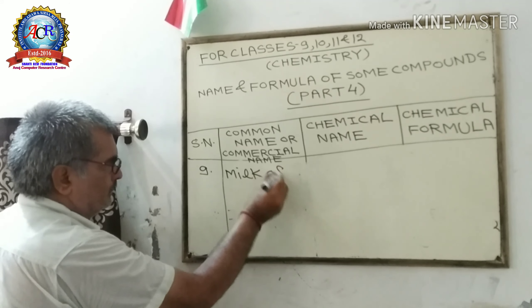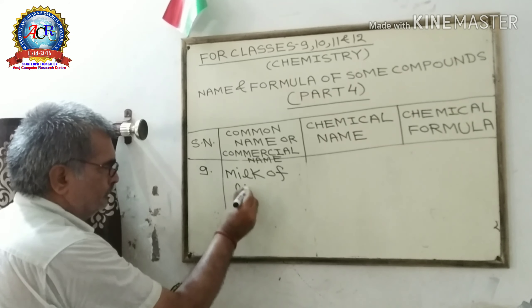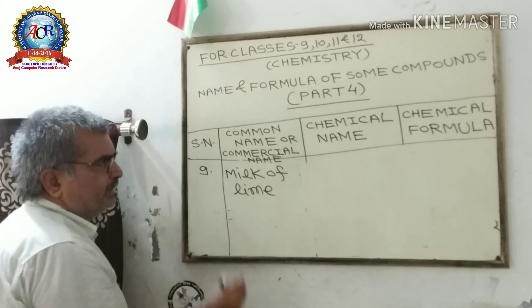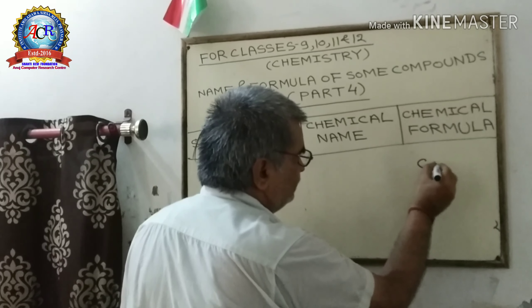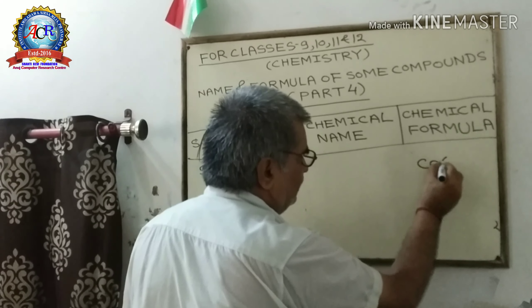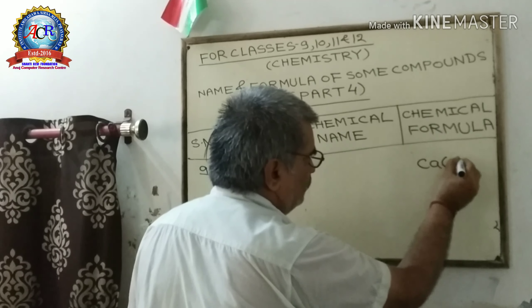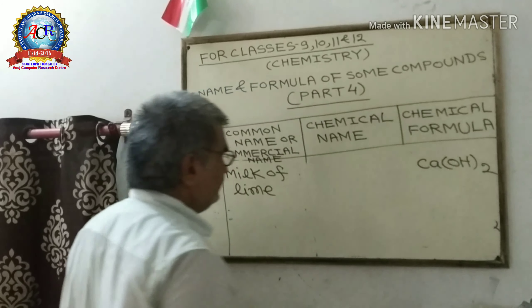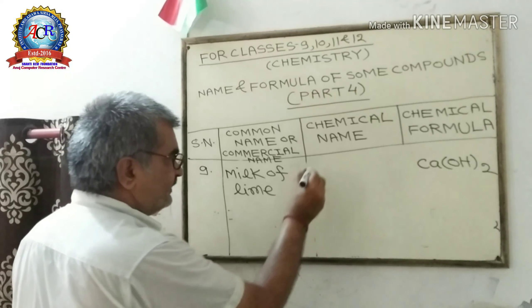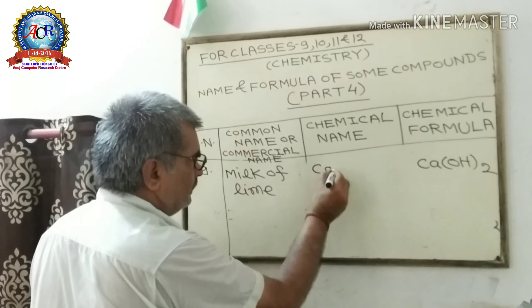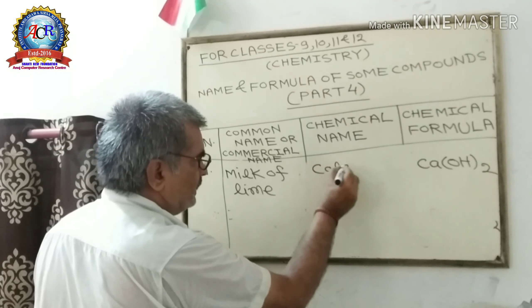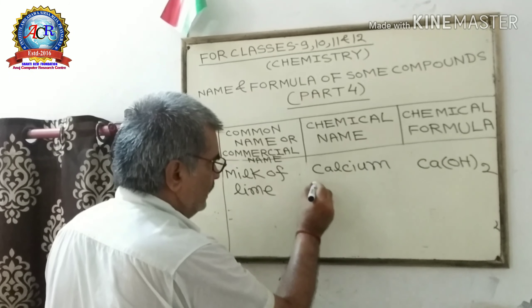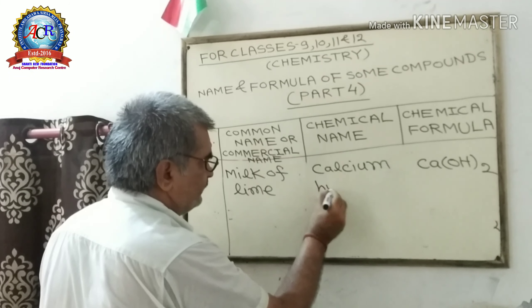Ninth: Milk of Lime. Its chemical formula is Ca(OH)₂. Its chemical name is Calcium Hydroxide.